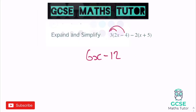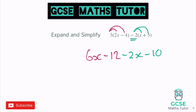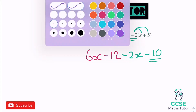Now looking at the second bracket, we have a negative 2 at the front, so we multiply by negative 2. Negative 2 times x is negative 2x, and negative 2 times positive 5 gives negative 10. The symbol is not just being copied — it is being affected by that negative 2. Be very careful with that negative 10.